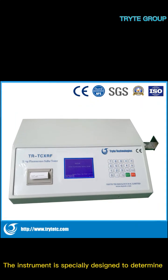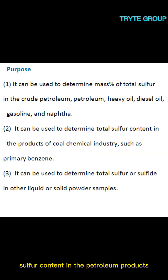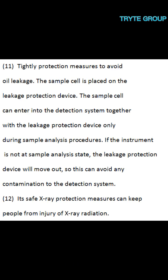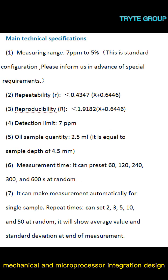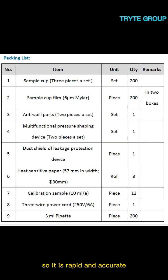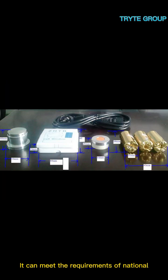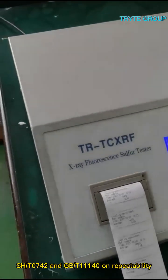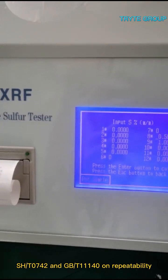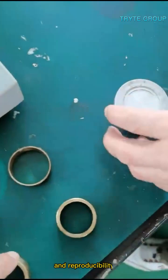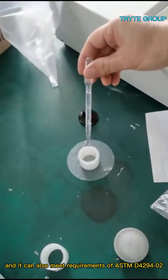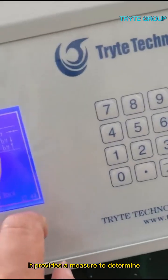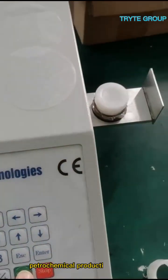The instrument is specially designed to determine sulfur content in petroleum products. It adopts an energy dispersive principle with electrical, mechanical, and microprocessor integration design, so it is rapid and accurate. It can meet the requirements of Chinese national standards GB/T 17040, SHG 0742, and GB/T 11140 on repeatability and reproducibility, and it can also meet requirements of ASTM D4294-02. It provides a measure to determine sulfur content during petroleum or petrochemical production processes.